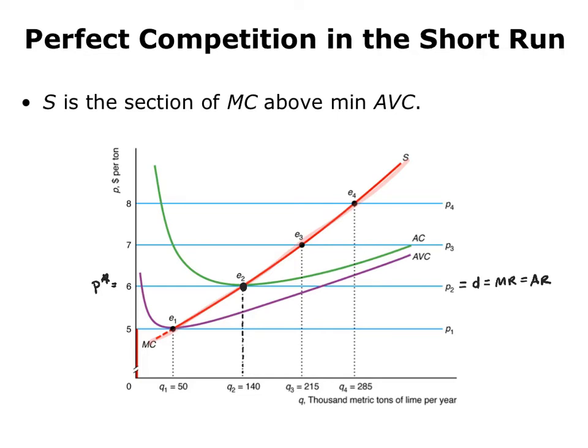At this quantity, the firm will stay open because average revenue or price is more than enough to cover its average variable cost. To summarize, if the price is $6, the firm will stay open and produce a quantity of 140.